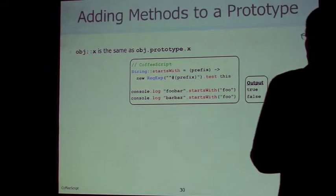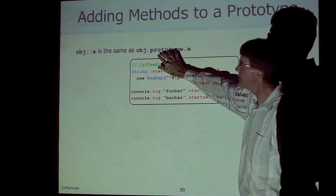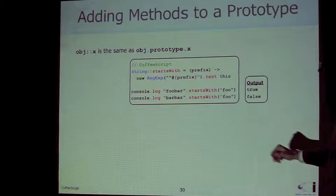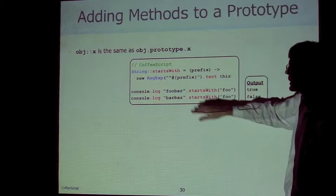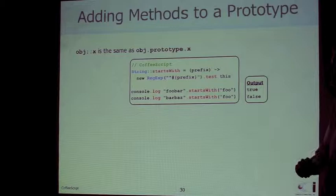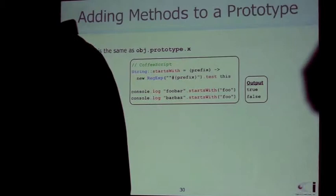You can add methods to a prototype in CoffeeScript using the double-colon (::) shortcut. For example, to add a startsWith method to the JavaScript String class: String::startsWith accepts a prefix, builds a regular expression, and uses the JavaScript test method to check if the string starts with that prefix. The generated JavaScript goes to String.prototype and attaches the method the same way you would manually.